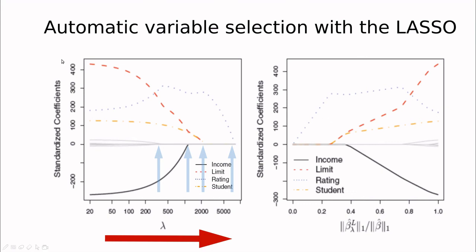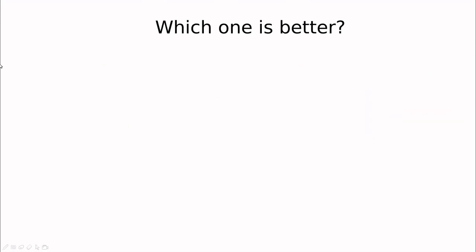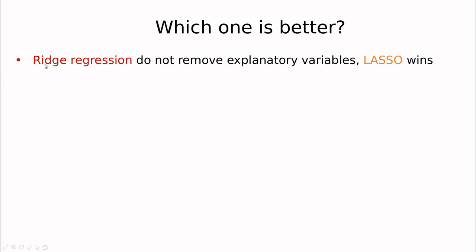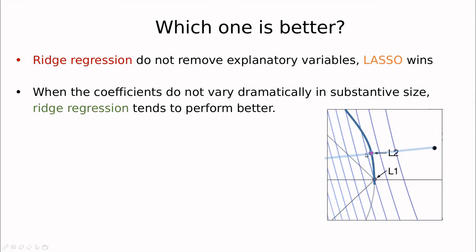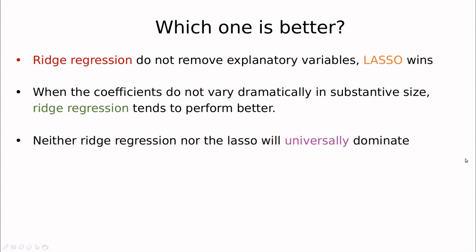So which is better? Ridge regression does not remove explanatory variables — all variables stay in the model, so for feature selection, Lasso wins. However, when coefficients don't vary dramatically, forcing the Lasso to move parameters to zero may be too aggressive. L2 just shifts parameters a little, but Lasso moves them too far. So Lasso may not be ideal when all the betas are approximately the same size. As usual, there is no universal method that dominates over the other.